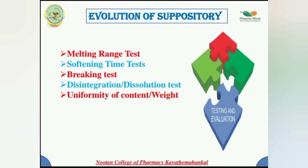Next: the evaluation of suppositories. The literature should be documented with tested methods to assure that the manufactured lot of suppositories consistently meets the standards established during manufacturing or early experimental lots. Finished suppositories are routinely inspected using five methods: the melting range test, softening time test, breaking test, disintegration and dissolution test, and uniformity of content and weight.